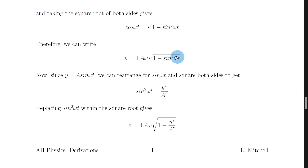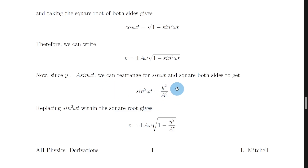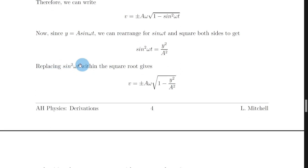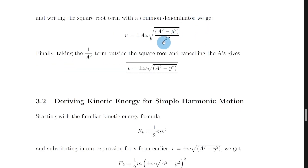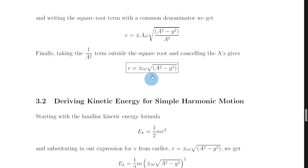We want to eliminate the sine squared omega t term, so using y equals a sine omega t again, we divide by a and square both sides to get sine squared omega t equals y squared over a squared. We replace that term within the square root, then get a common denominator of a squared, take the a squared term outside the square root — giving a divided by a which cancels out — to arrive at the final equation: v equals plus or minus omega times the square root of a squared minus y squared.